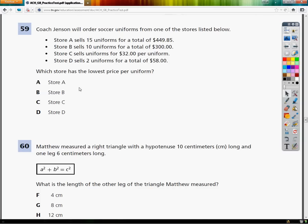This is the TCAP practice test for grade 8, question number 59. Coach Jensen will order soccer uniforms from one of the stores listed below: Store A, Store B, Store C, Store D.